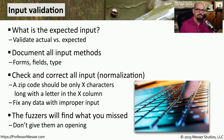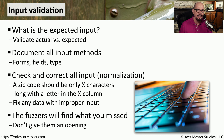There are automated processes for providing different types of input for these applications — we refer to this process as fuzzing. Fuzzers will put random types of data into the input fields to see what the application might do. And if the application performs unexpectedly, the application developer may need to go back and change the way that they're doing their input validation.